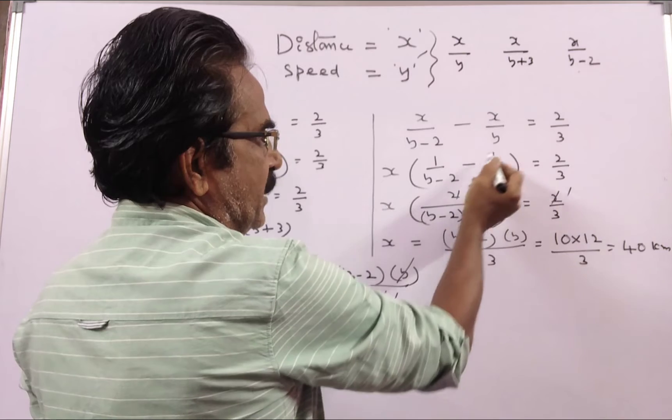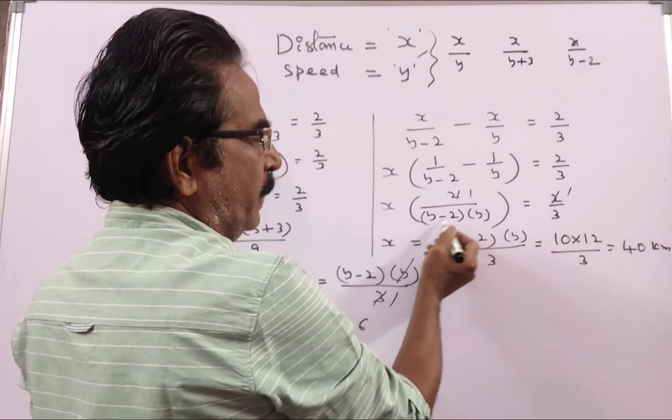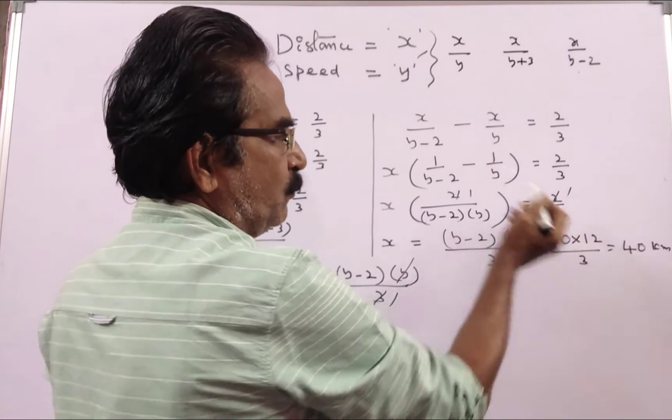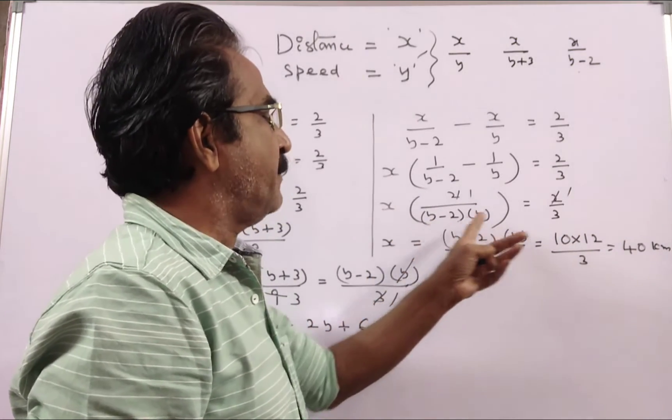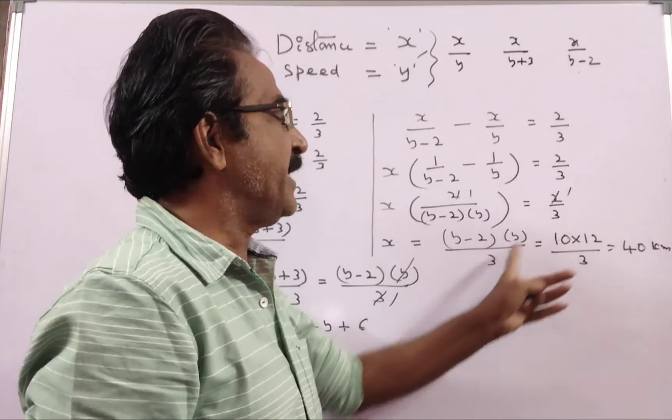x into y minus y minus 2, 2 by y minus 2 into y is equal to 2 by 3. 2 gets cancelled. Then x is equal to y minus 2 into y by 3.